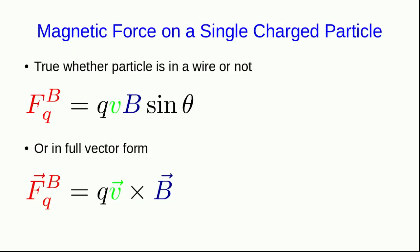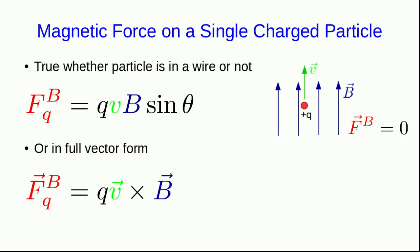Notice that because it's a cross product, as we've already seen, if the velocity vector and the B field vector are in the same direction, then the magnetic force must be zero. And also, the magnetic force must be perpendicular to the velocity, and it must also be perpendicular to the B field. So practice your right-hand rule and verify that for this charged particle in this diagram, the magnetic force must be out of the screen.